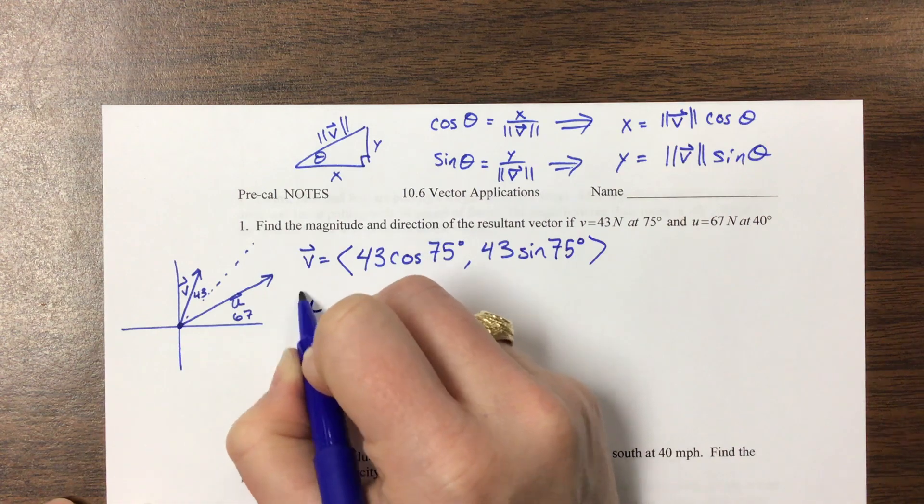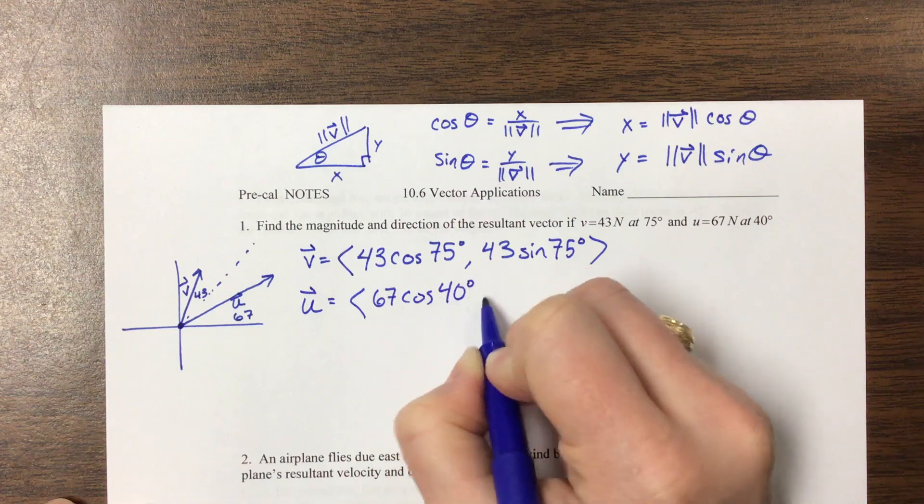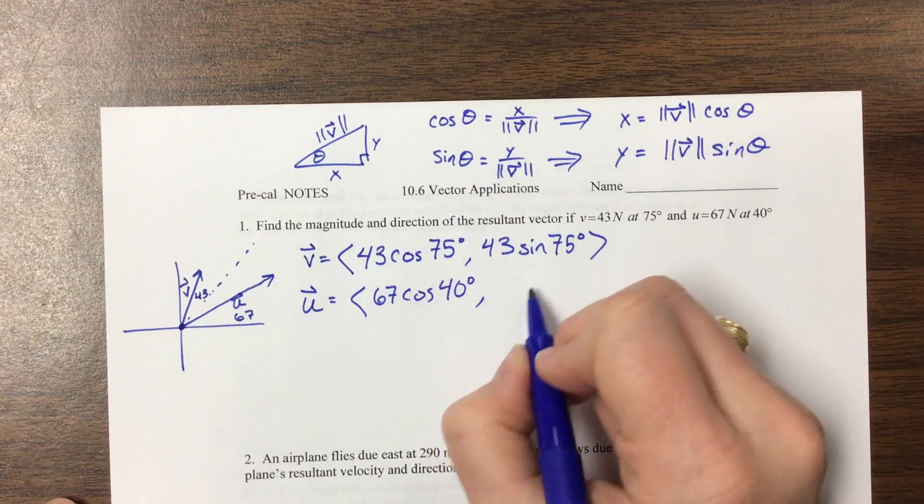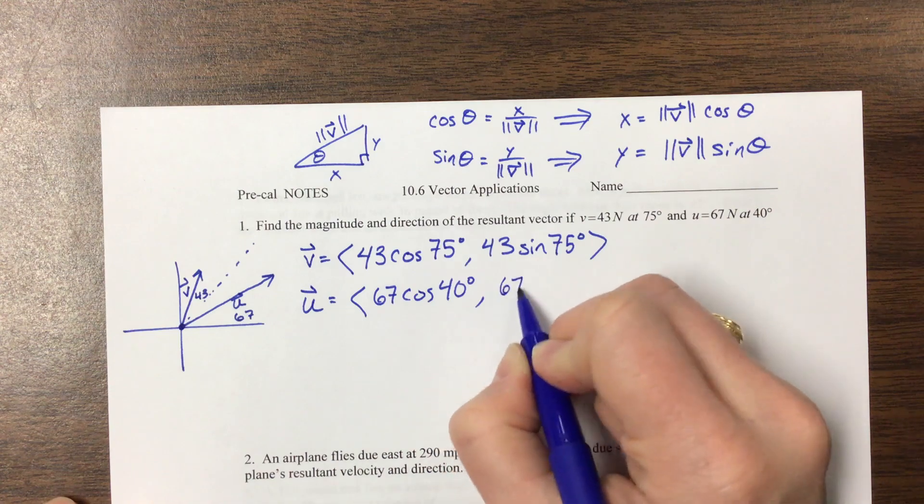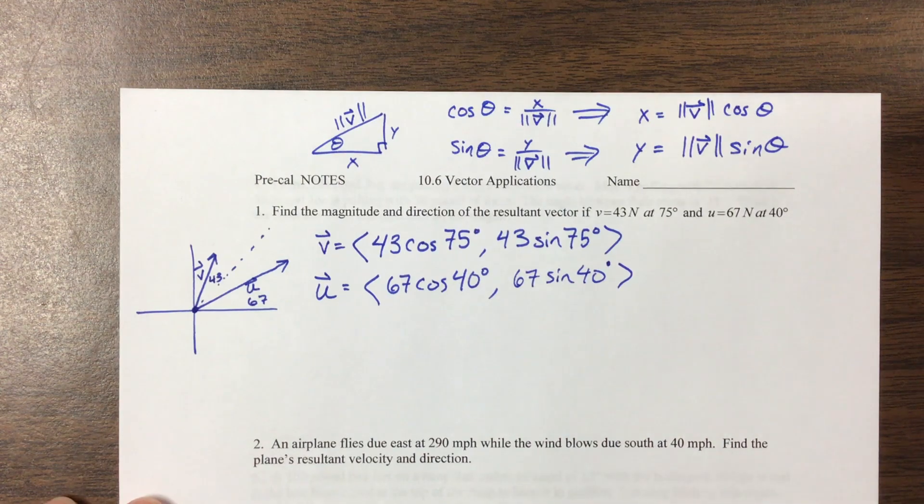And then we have the U, similar idea. U ends up being 67 cosine 40, and then the Y value of U is 67 sine of 40. And so if we have these two things happening, we can add them together.